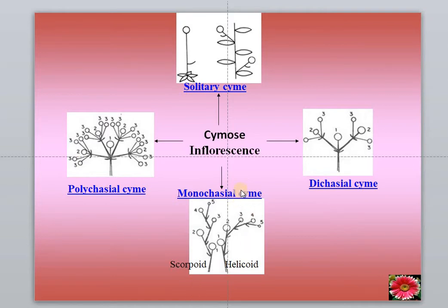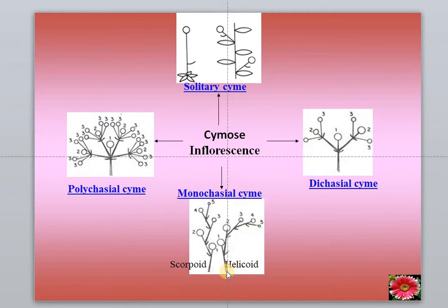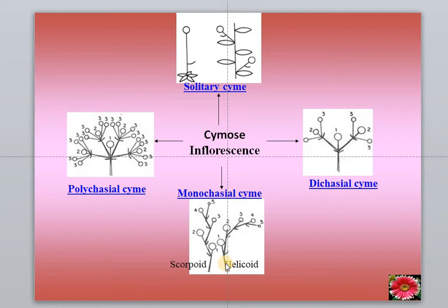A monochasial cyme is where, considering the dichasial diagram, the left side branch is not developing. So growth is towards only one side. On the next branchlet also, the left side flower is not developing. The inflorescence stalk ended in a flower; from the lateral bud a peduncle developed, a small pedicel developed, and there comes a flower. From the lateral bud, again a branch leads to the next flower. This is called a monochasial cyme because the lateral buds are produced to only one side, and it tends to curve.